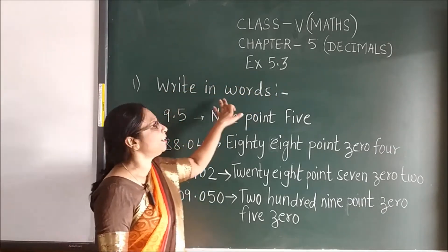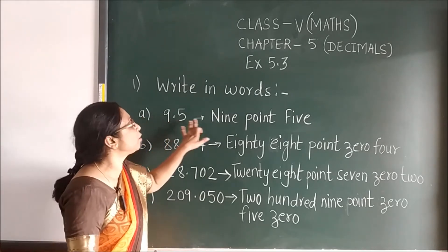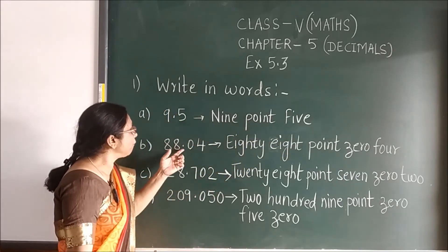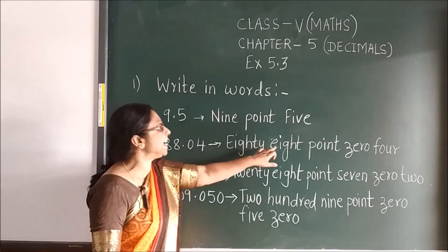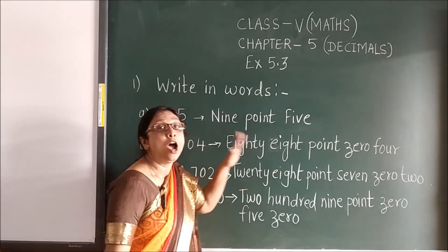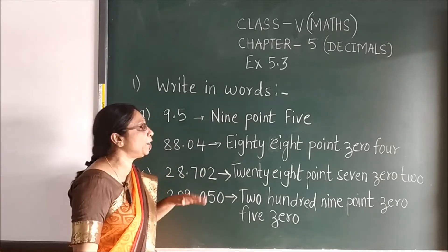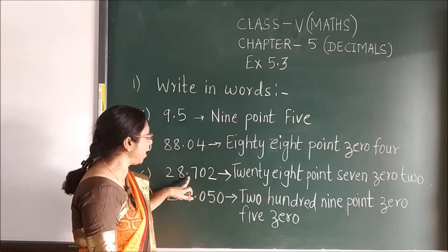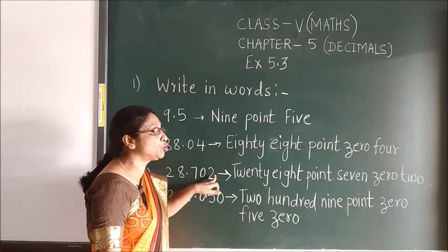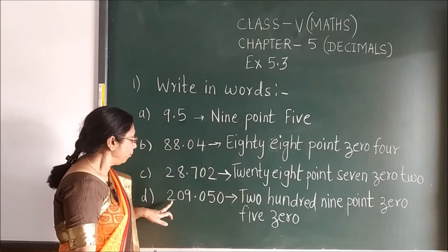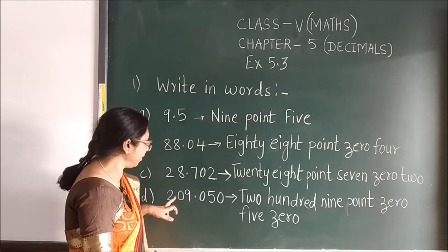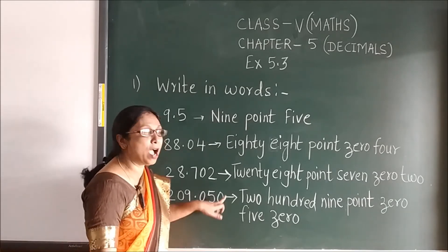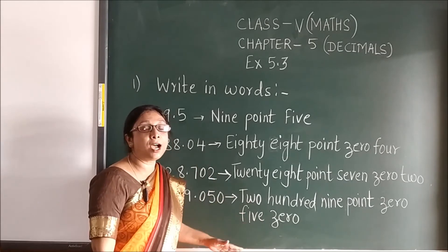Now we will see exercise 5.3, first question: write in words. For example, 9.5 — as you read it, you write it the same way. Before the point it is 88, so you write 88. Then 0.4 — after the point you pronounce separately and then write it. Here 28 — read it the same way. Then 209, then 0.5 — as you are reading, you write it in the same way.